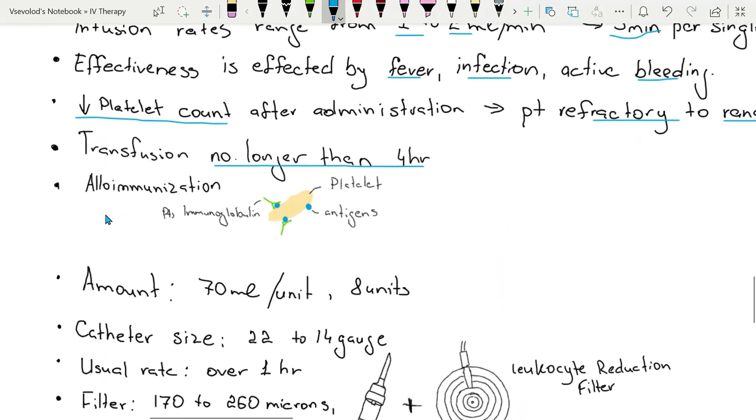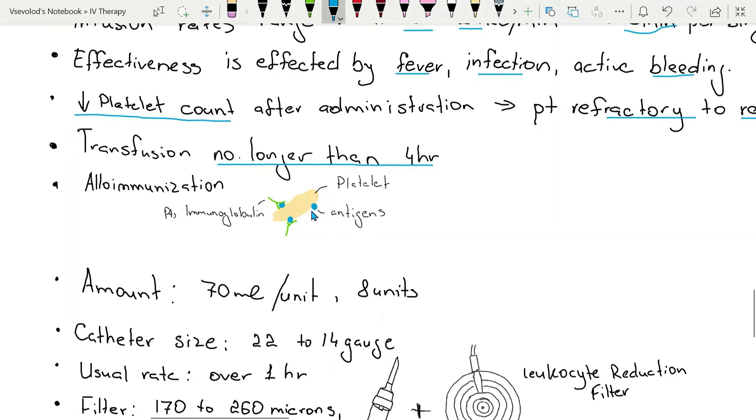There is a safety concern with human leukocyte antigen alloimmunization, which is immunization to the donor antigens. Patients are able to mount an immune response against antigens on the platelets.